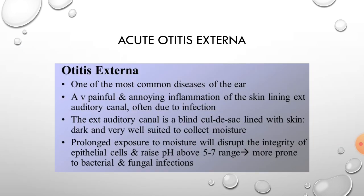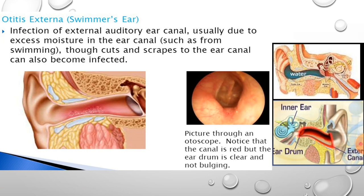Otitis externa or acute otitis externa is a common and very painful disease of the ear involving inflammation of the skin lining the external auditory canal. Because the external auditory canal is a blind, closed sac lined with skin, it collects moisture, and prolonged exposure to moisture disrupts the integrity of the epithelial cells and raises the pH above the 5-7 range, making it more prone to bacterial and fungal infections. This condition caused by excessive moisture is called swimmer's ear.